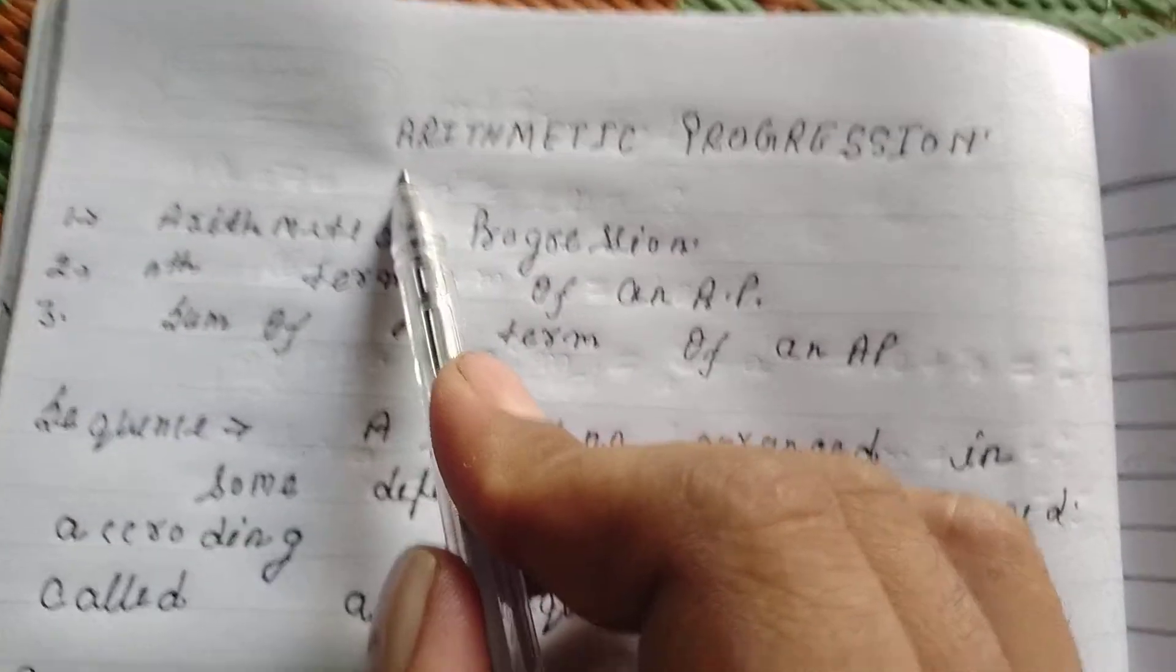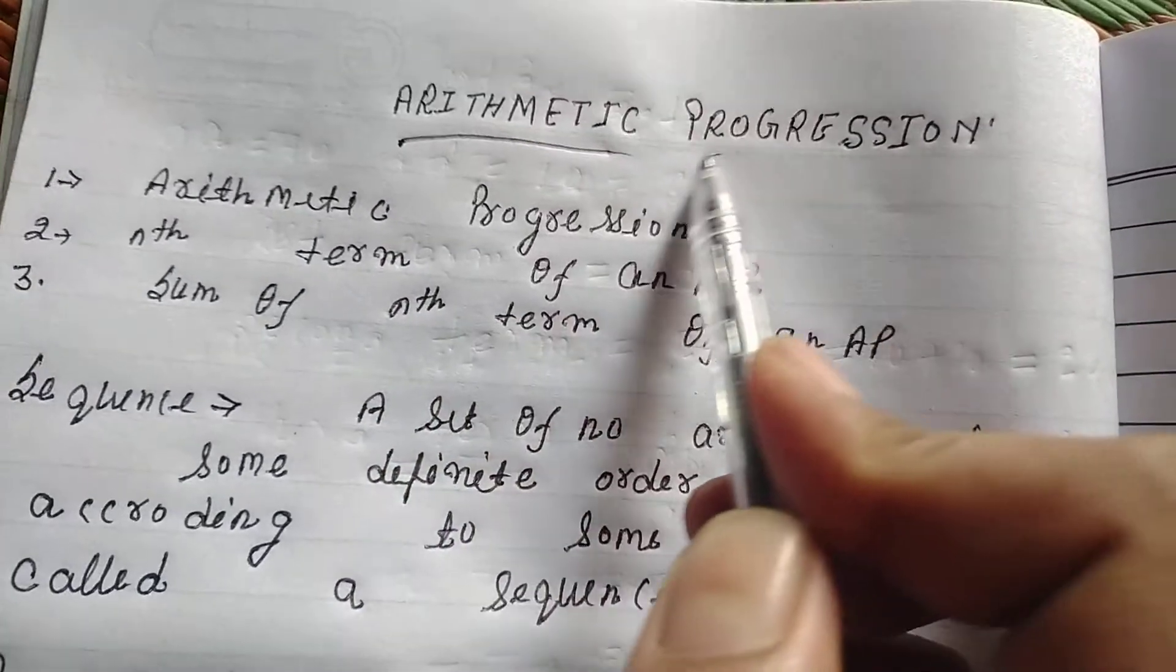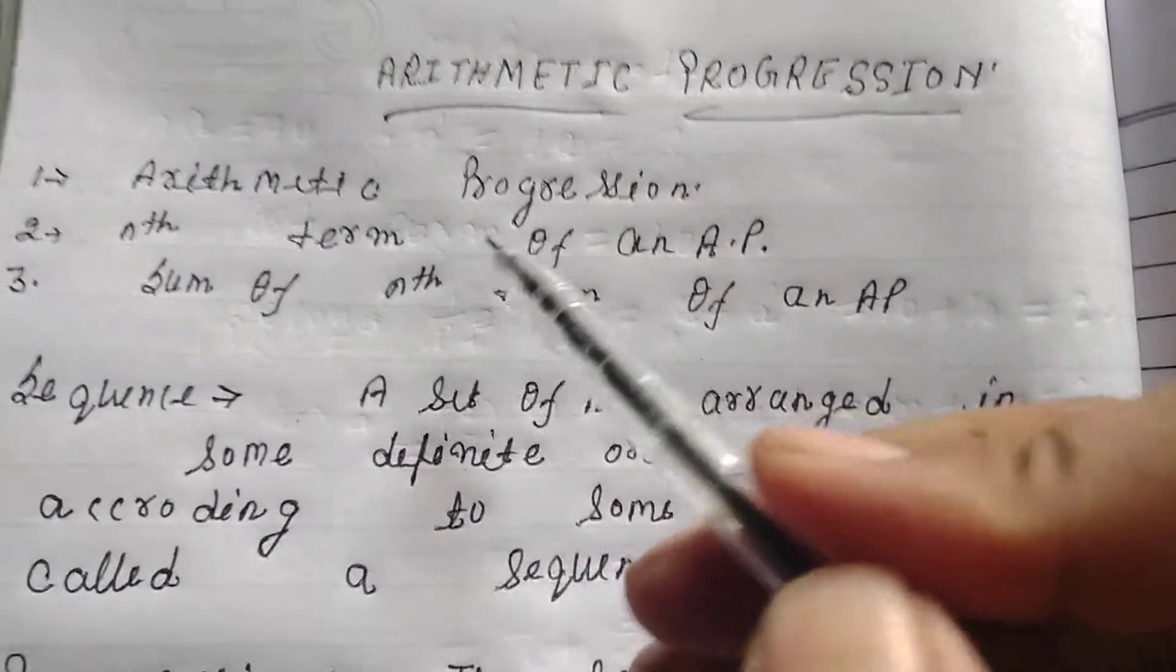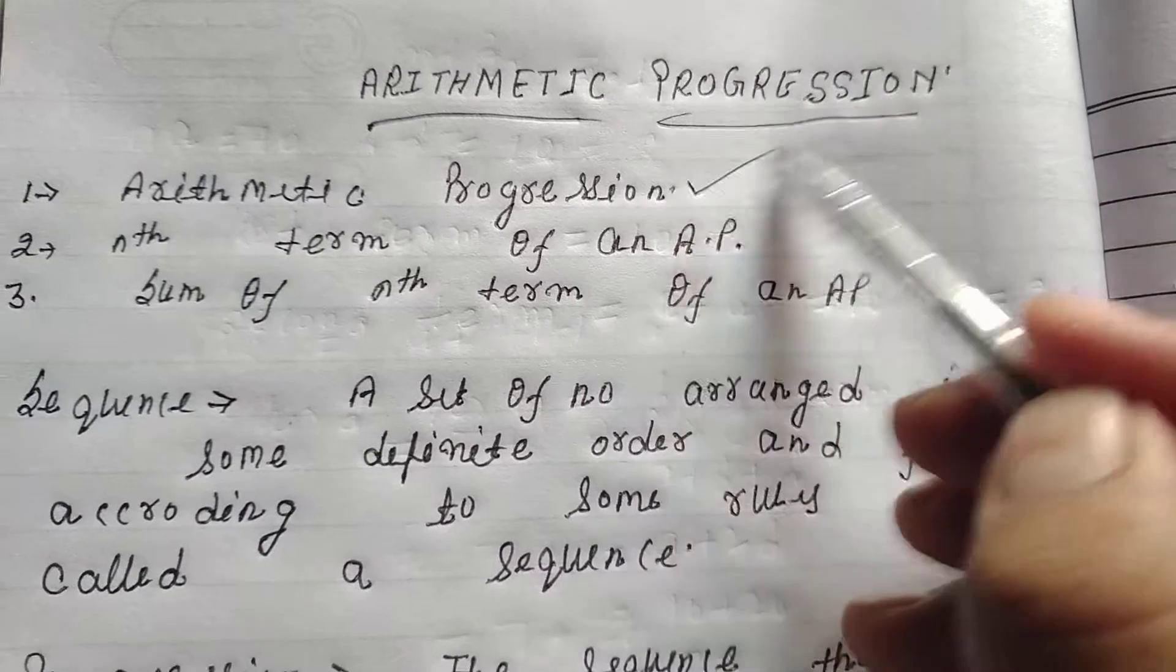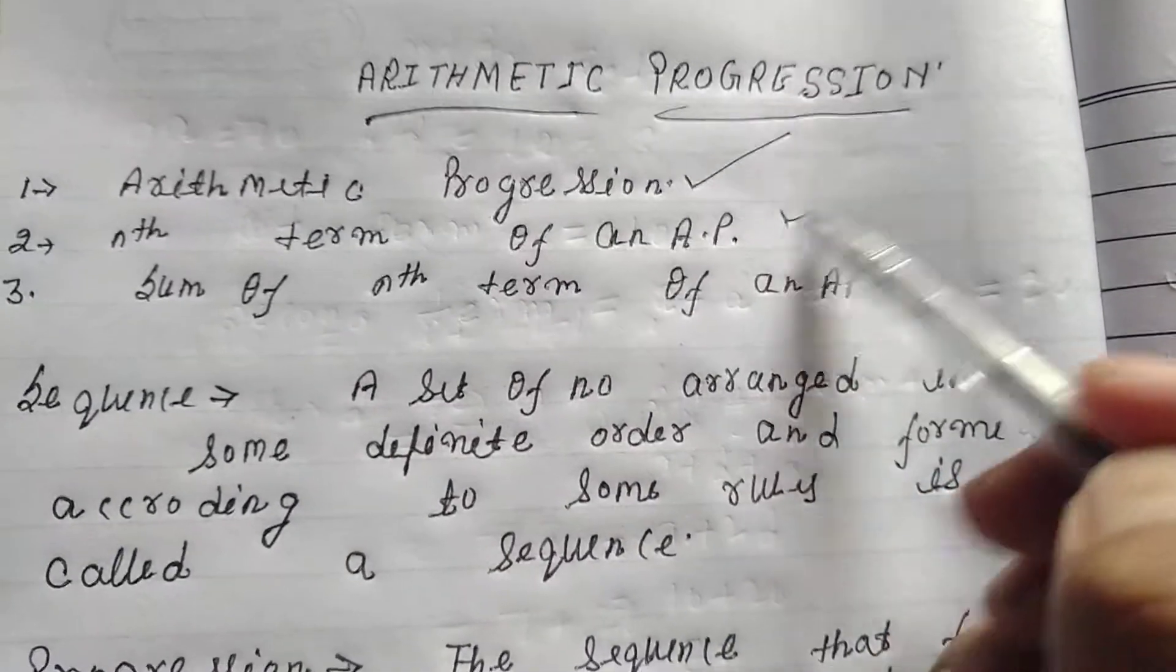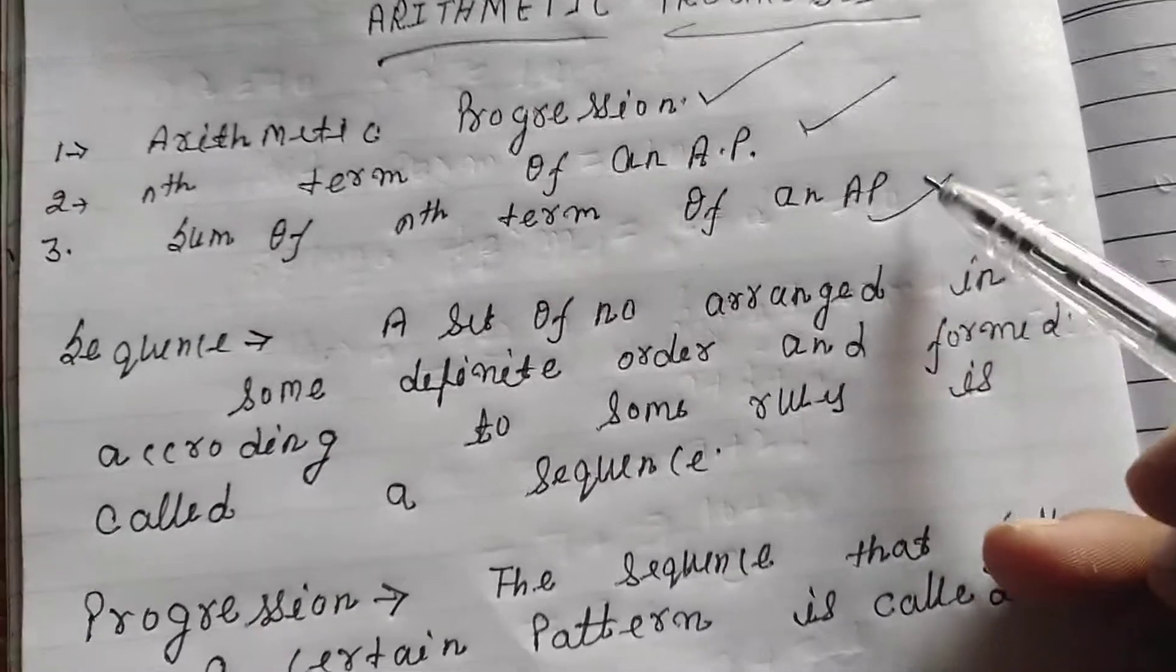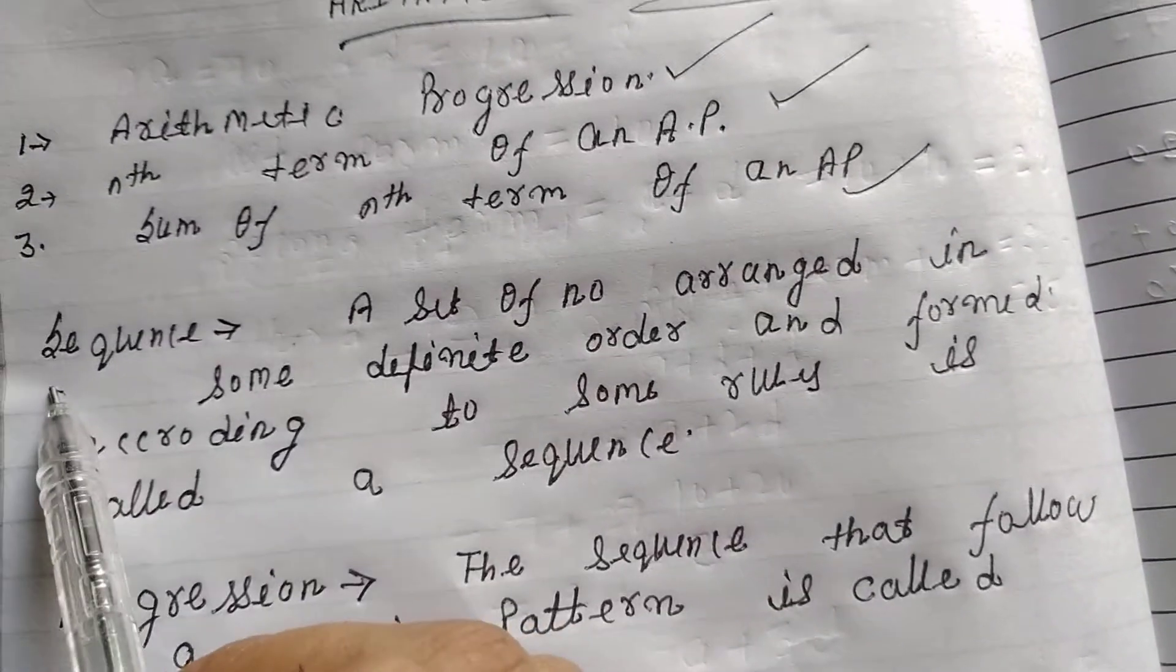Dear students, this is chapter number five, Arithmetic Progression. In this chapter we have to read about three topics mainly: what is arithmetic progression, nth term of arithmetic progression, and sum of nth term of arithmetic progression.